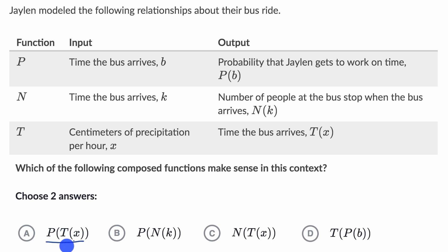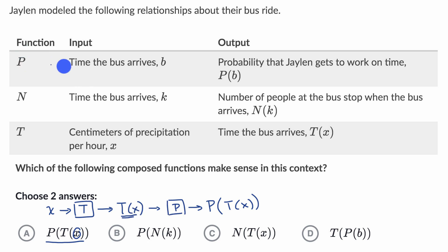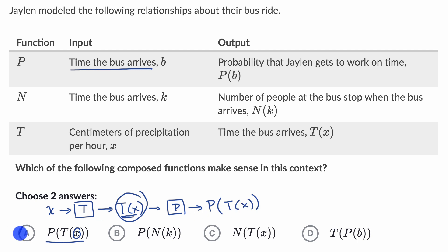Let's look at the first composite function. We're taking x, inputting it into function t, which outputs t of x, and then inputting that into function p, which outputs p of t of x. X is centimeters of precipitation per hour. T of x is the time the bus arrives — and function p expects the time the bus arrives as its input. So this makes a lot of sense: we have p as a function of the time the bus arrives, which is itself a function of the centimeters of precipitation per hour. I like this choice.